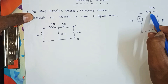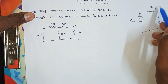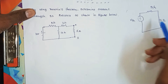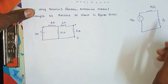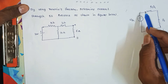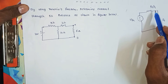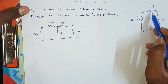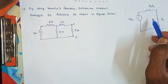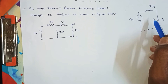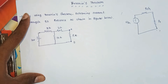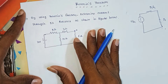VTH is the open-circuited voltage — first step is to measure VTH by open circuit between the two terminals. And RTH is the Thevenin equivalent resistance measured with all the voltage sources short-circuited and all the current sources open-circuited. This is the Thevenin theorem statement.